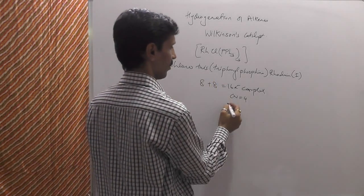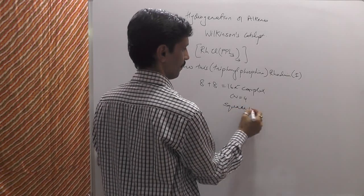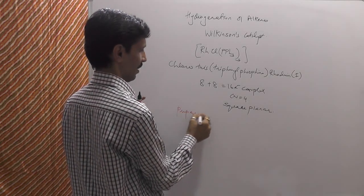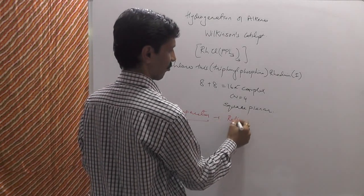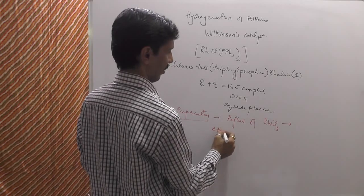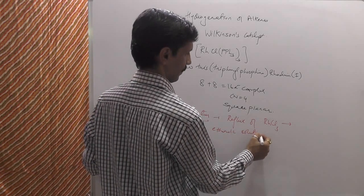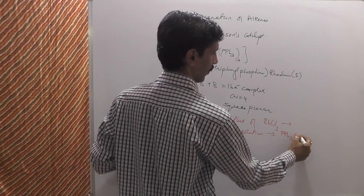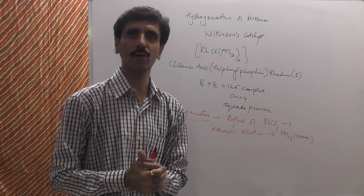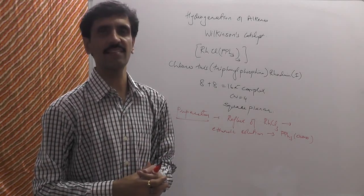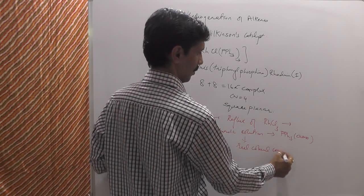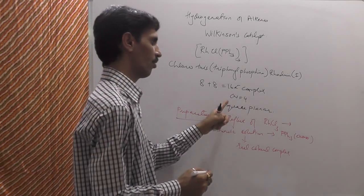The shape of this complex is square planar. The preparation of this complex is carried out by refluxing rhodium trichloride (RhCl₃) in ethanolic solution with an excess of triphenylphosphine, which results in the formation of a red-colored, 16-electron, coordination number four, square planar complex.